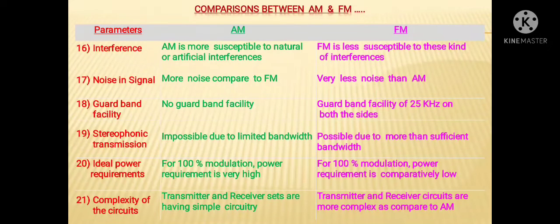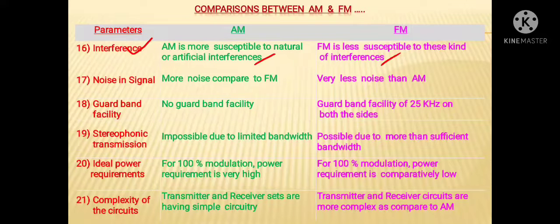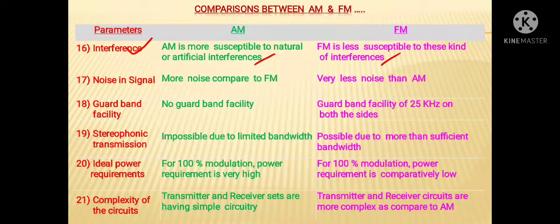The next parameter is related to interference. In AM, it is more susceptible to natural or artificial interferences, whereas in case of FM it is less susceptible to this kind of interference. That means in AM interference is more, whereas in FM it is lower.